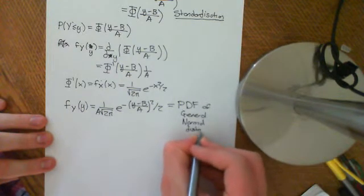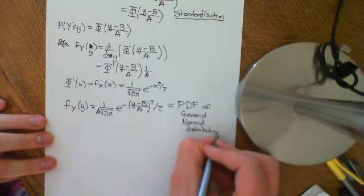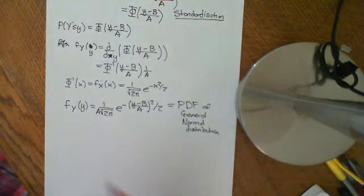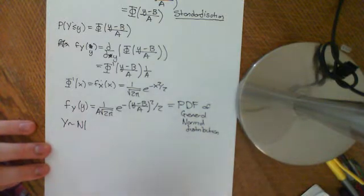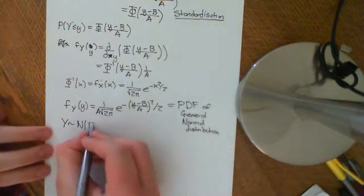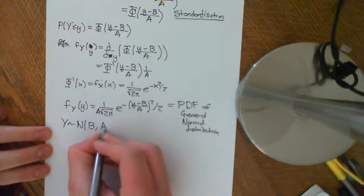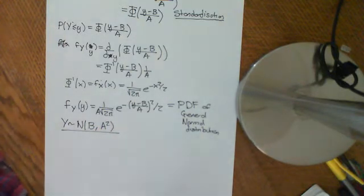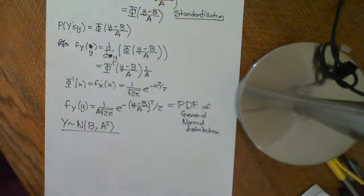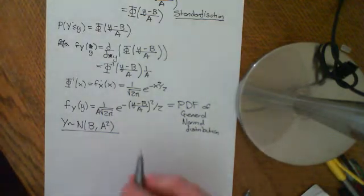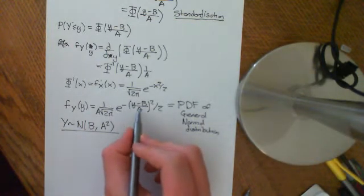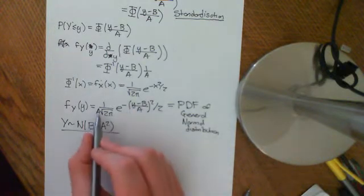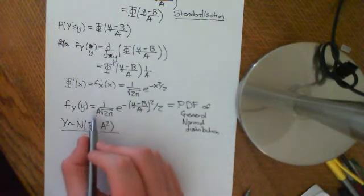Y is distributed in a general normal fashion. To use more classical notation, one would write Y is distributed normally with mean mu and variance sigma squared, and the PDF of this random variable Y as a function of little y is equal to 1 over sigma times the square root of 2π, times e to the negative (y minus mu) over sigma, squared, divided by 2. That is the PDF of the general normal distribution.